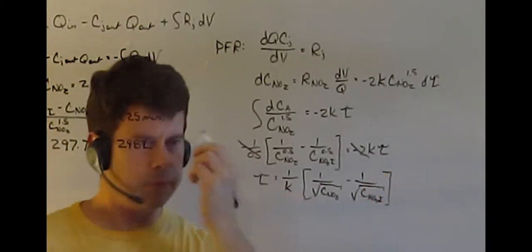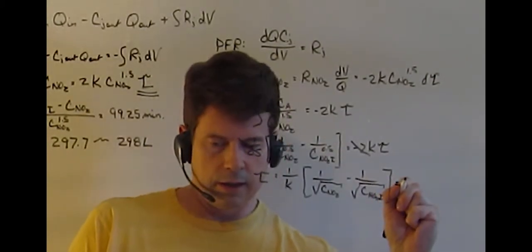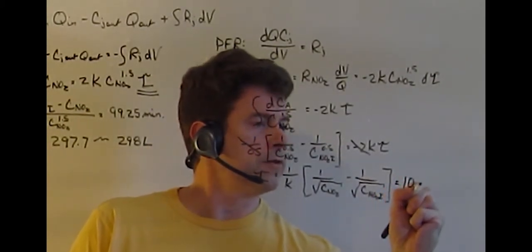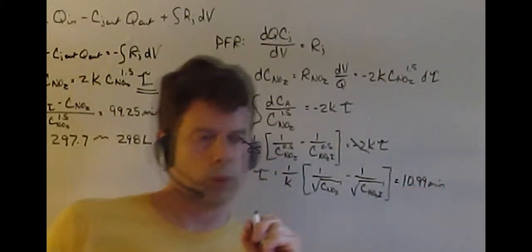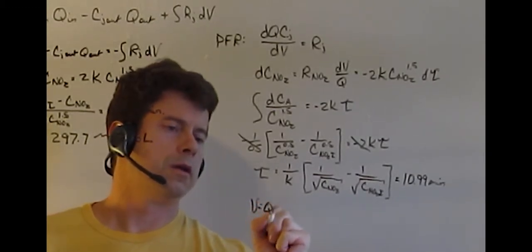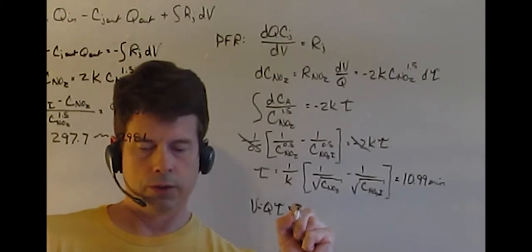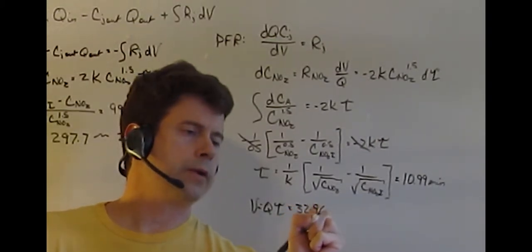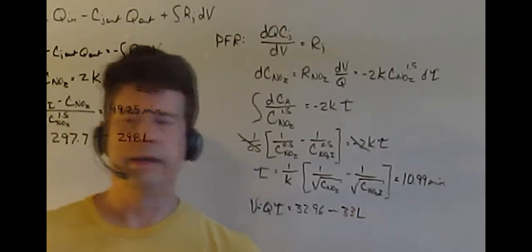We can plug in the same values, and this time we get a result, this is duration of 10.99 minutes. Then when we multiply our volume Q tau, this now comes out to 32.96 or approximately 33 liters.